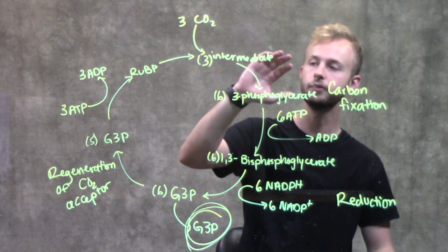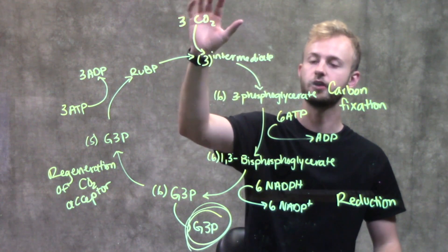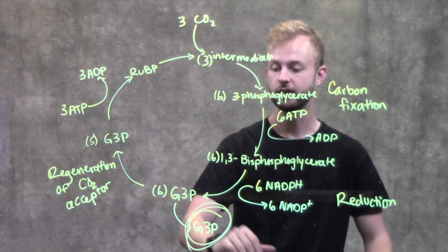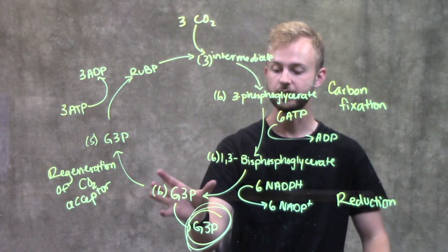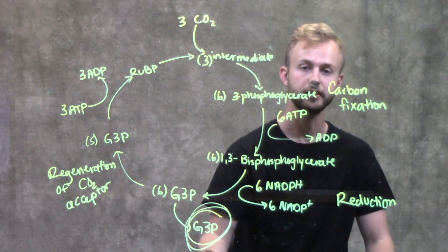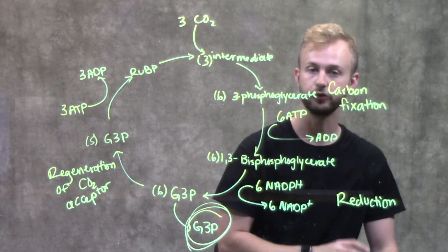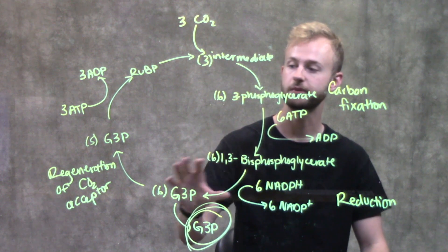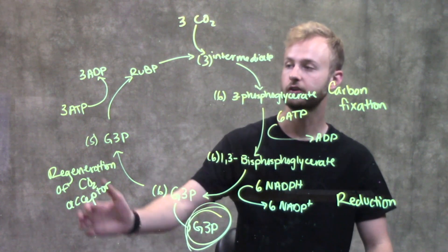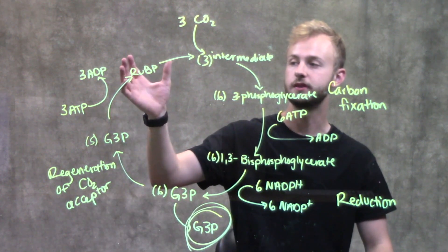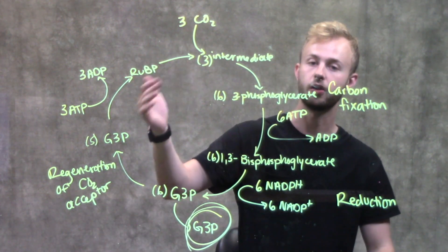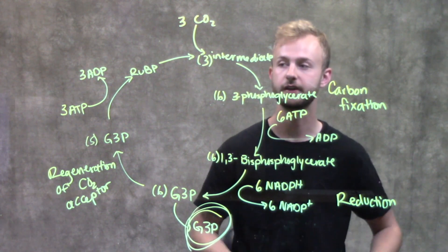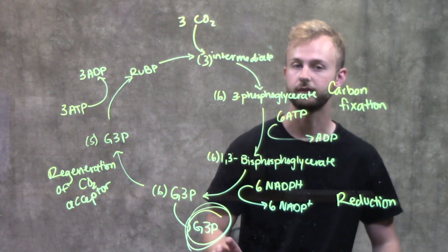So just to review, we start out with carbon dioxide and send it through these different phases, ending up with only one molecule of G3P that we can use to make glucose. The other 5 molecules of G3P then go back to be recycled to regenerate RuBP, which is ribulose bisphosphate, to keep this cycle going.